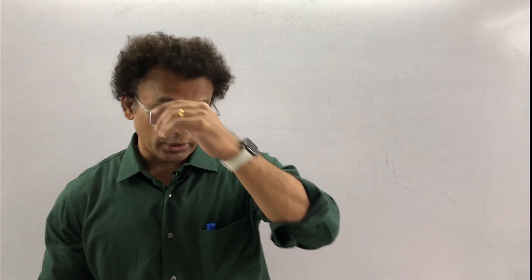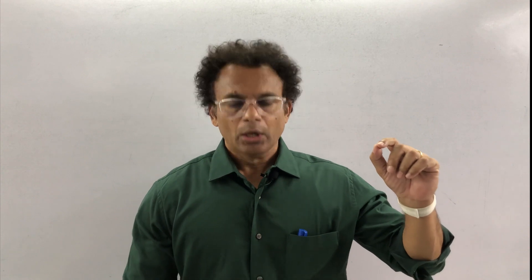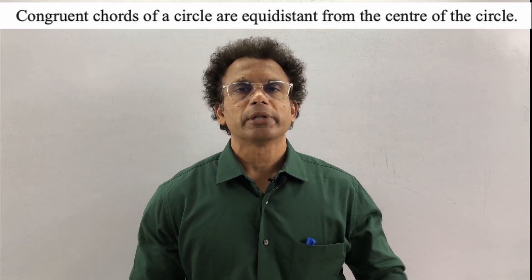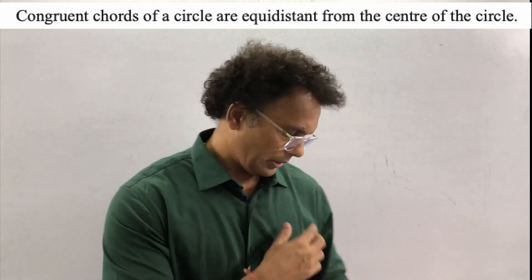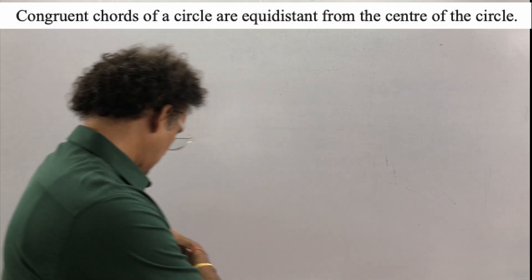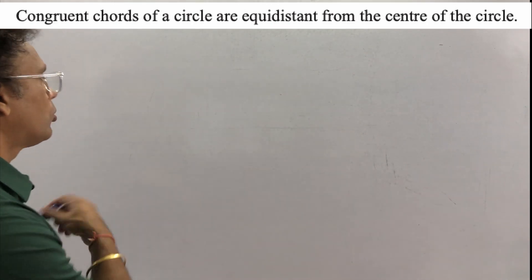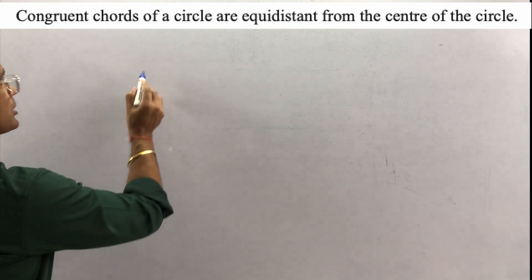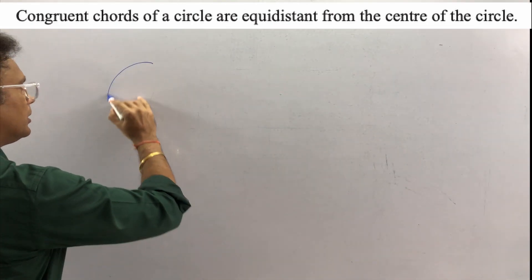Before doing exercise 6.2, you should know two theorems. The first one is: congruent chords of a circle are equidistant from the center of the circle. What do you mean by that? Congruent chords of a circle are equidistant from the center of the circle.